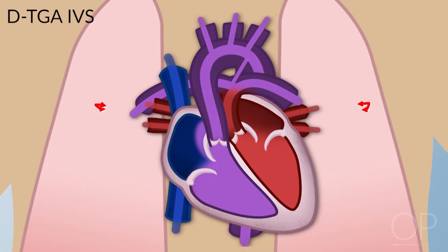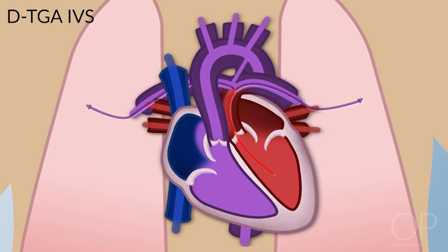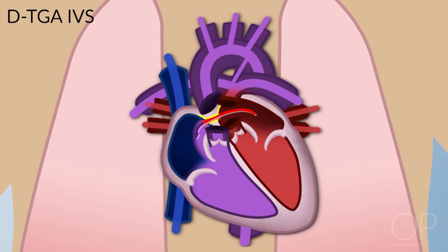Blood from the lungs goes left atrium, left ventricle, out to the pulmonary artery. These kids, to survive, need some kind of mixing, usually at the ductal level and the atrial level. These kids come in very sick in the first few days of life.